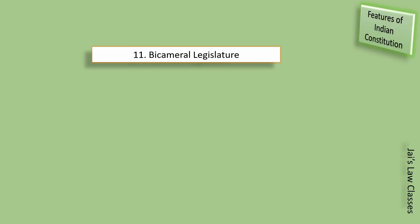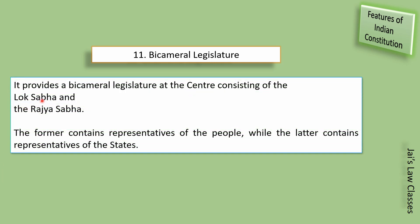Next feature is bicameral legislature. The constitution provides a bicameral legislature at the center consisting of the Lok Sabha and the Rajya Sabha. The former contains representatives of the people while the latter contains representatives of the states. Lok Sabha mein central government ke log chunte hain aur Rajya Sabha mein state dwara chune gaye logon ko bithaya jaata hai. Together they form the bicameral legislature of India.